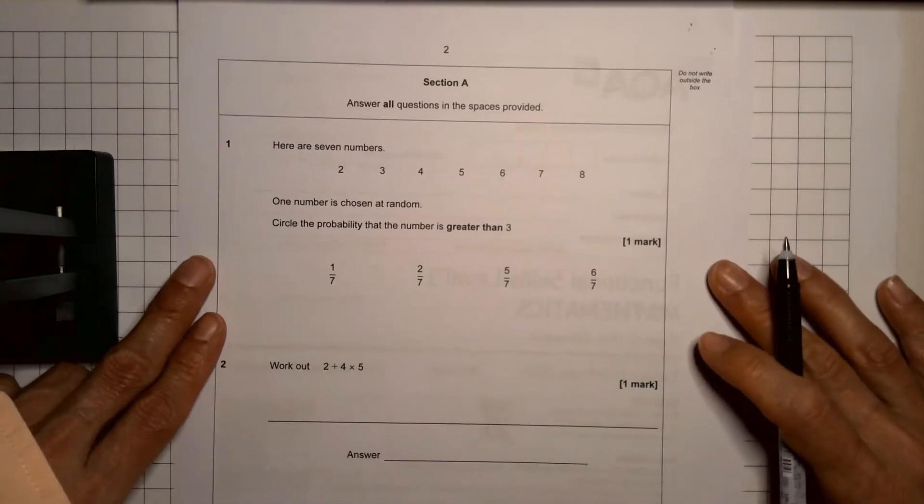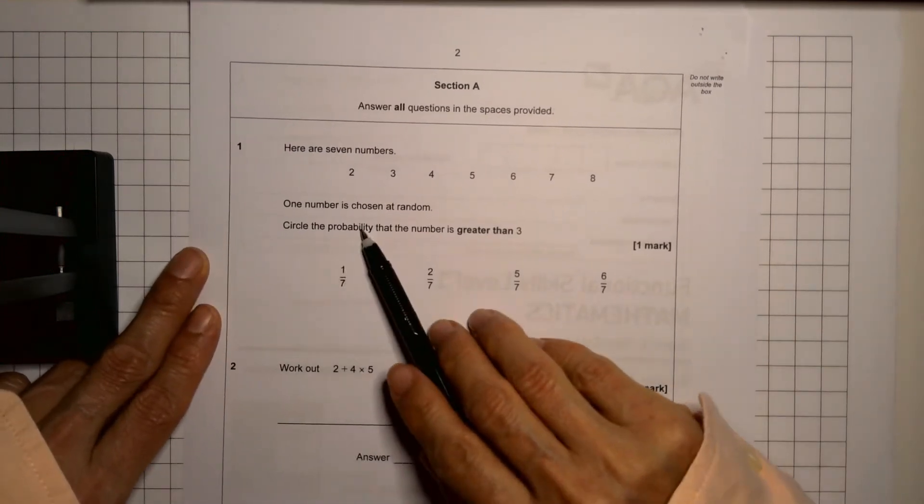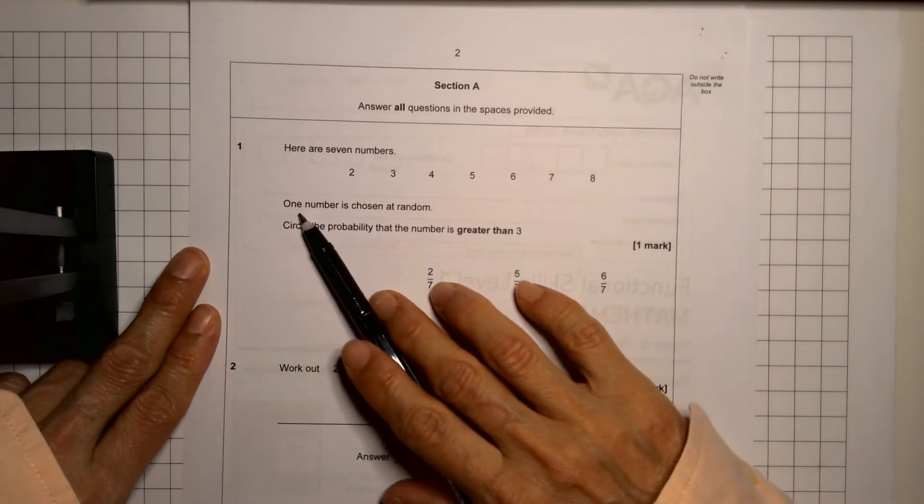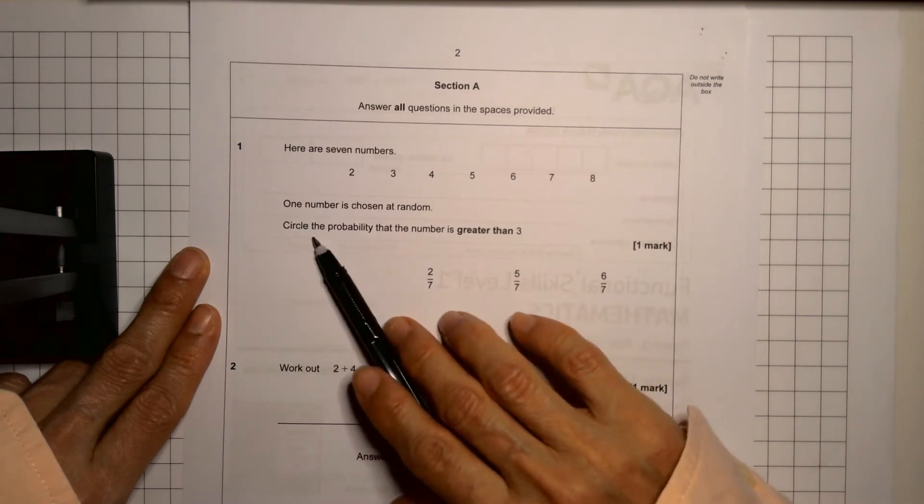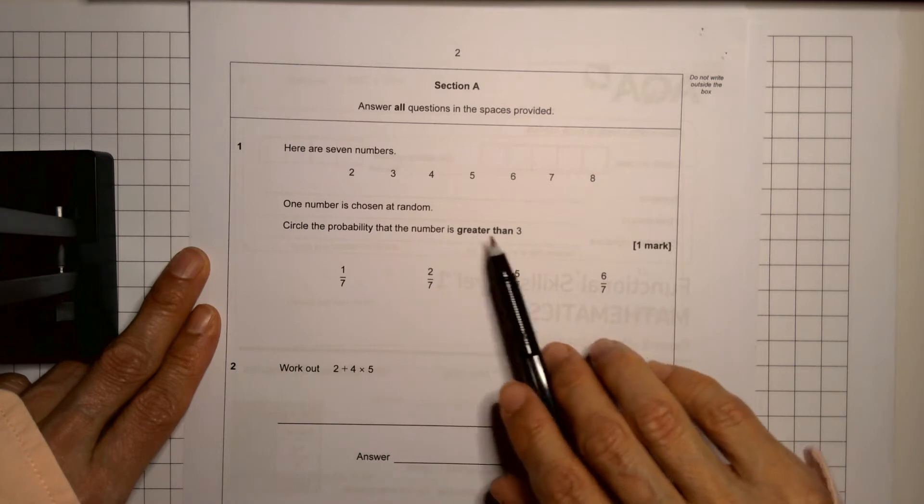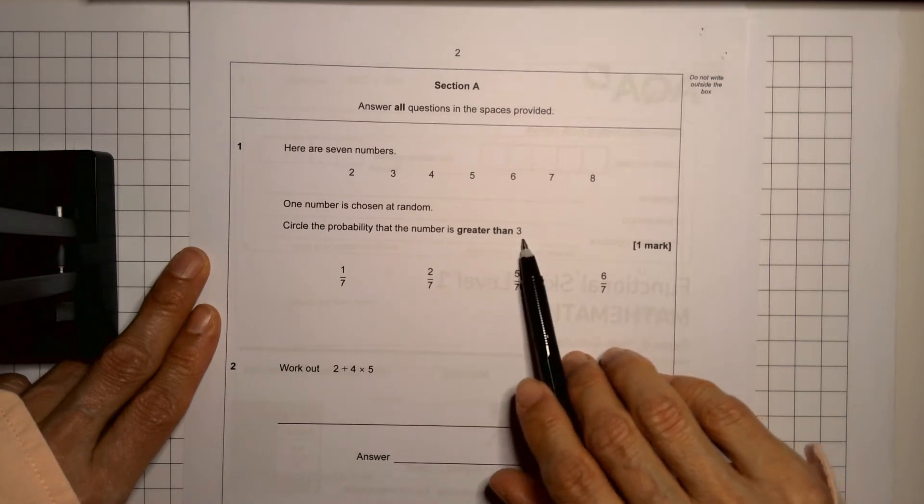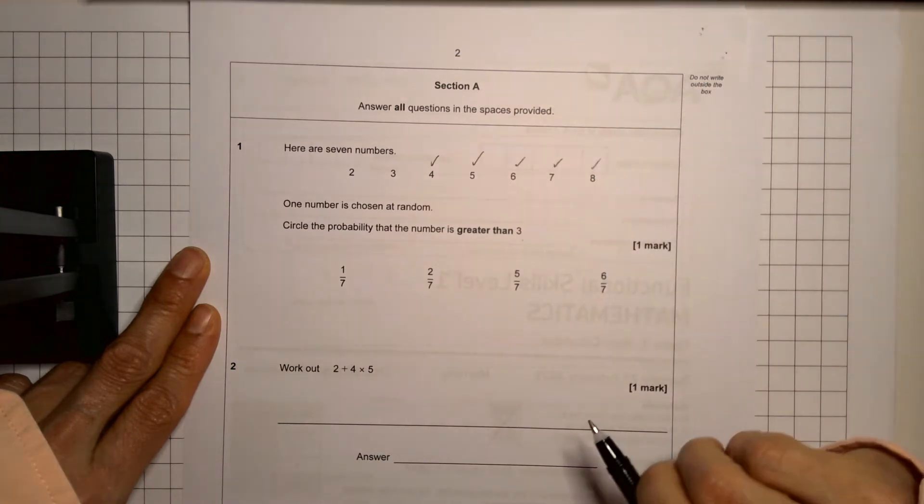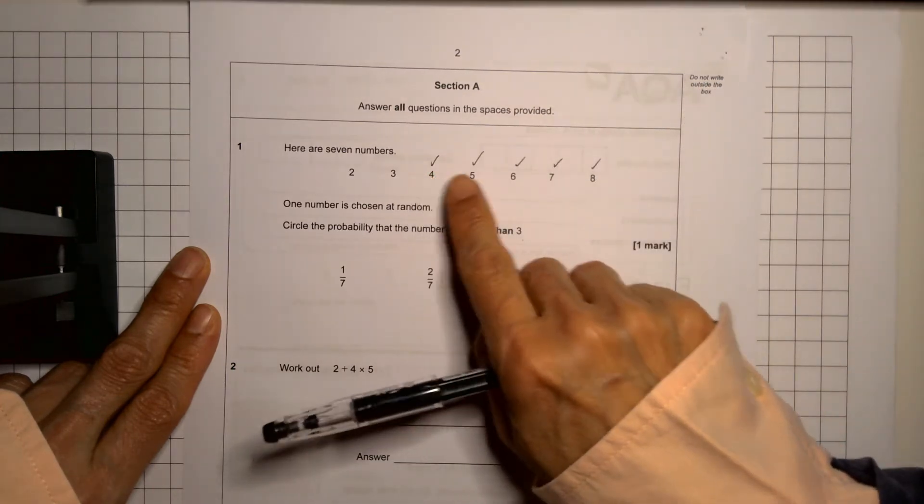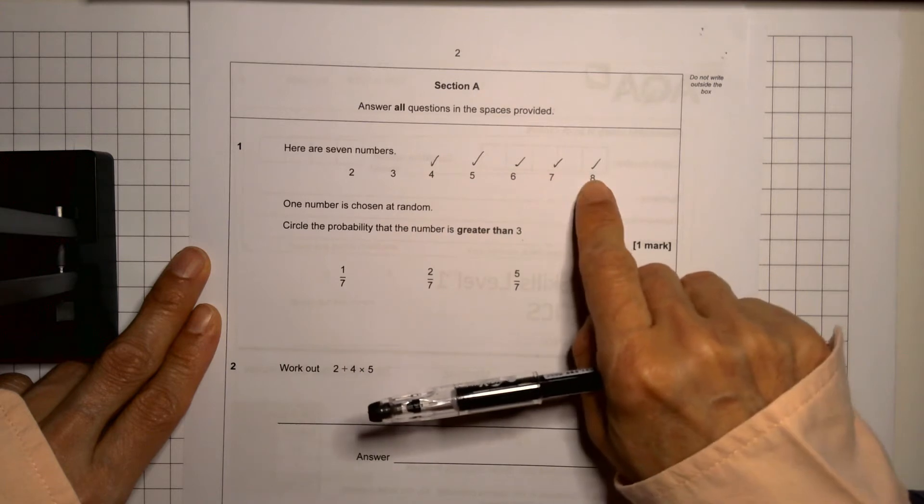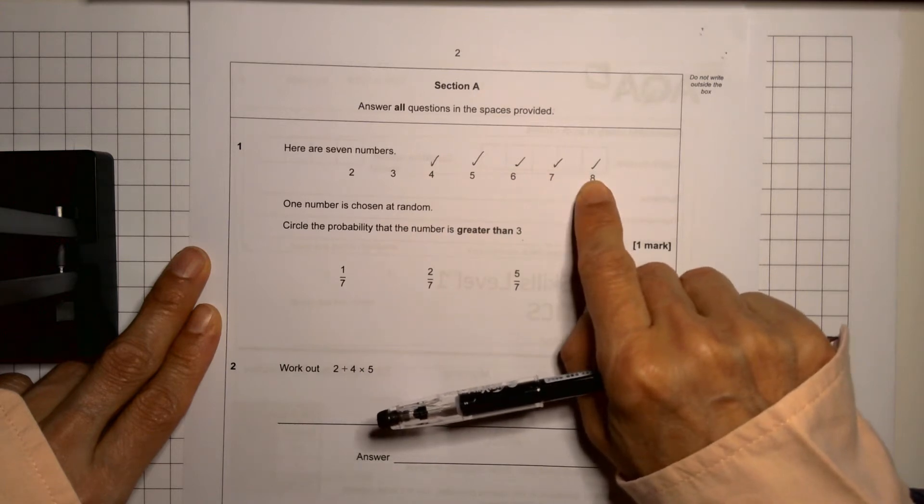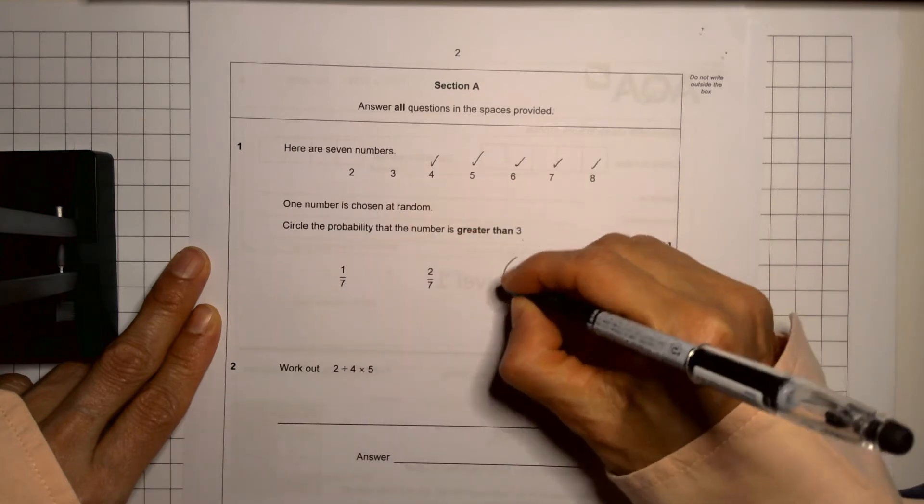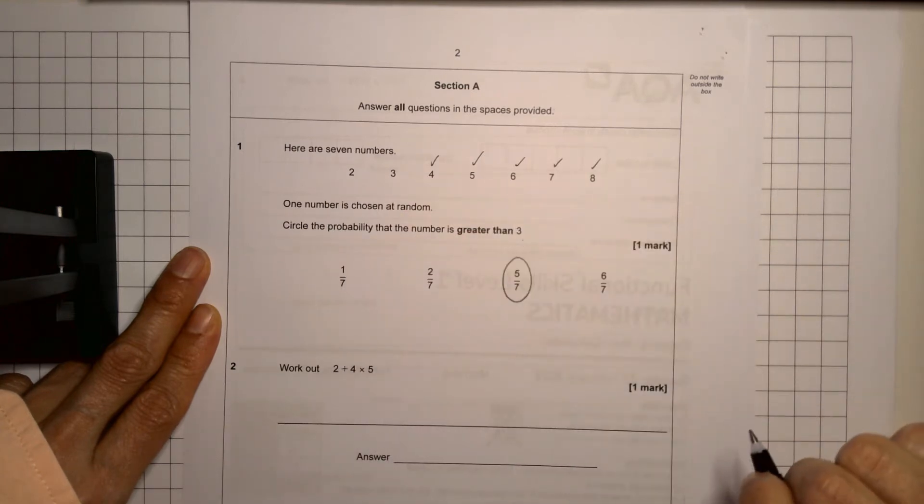The first question is a probability question. We have several numbers and they're asking us, they're telling us that somebody chose a number, circle the probability that the number is greater than three. So we want to find all the numbers that are greater than three. So how many do we have? We have one, two, three, four, five. There are five numbers that are greater than three, so we're looking for five out of the seven numbers. There's our answer.